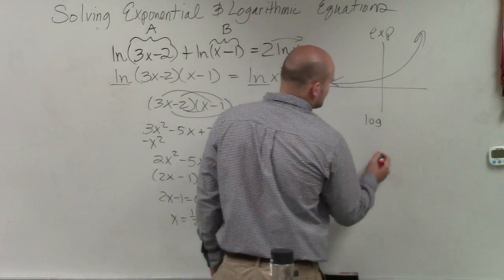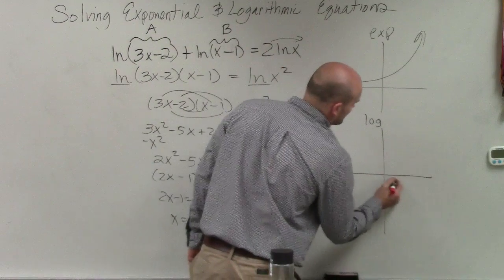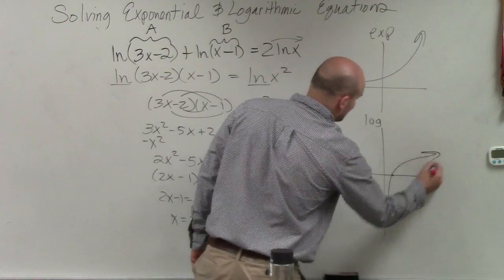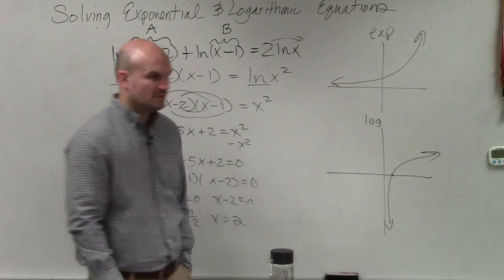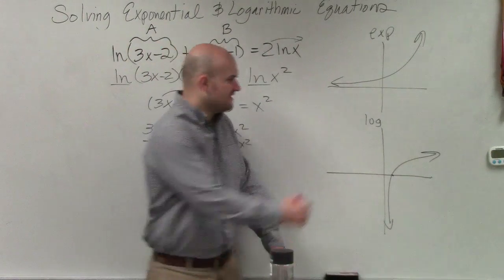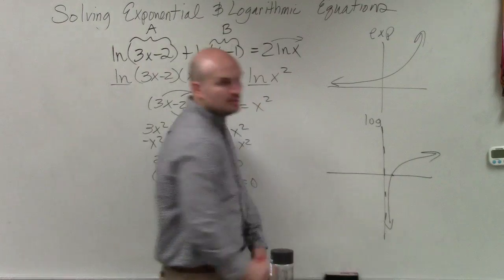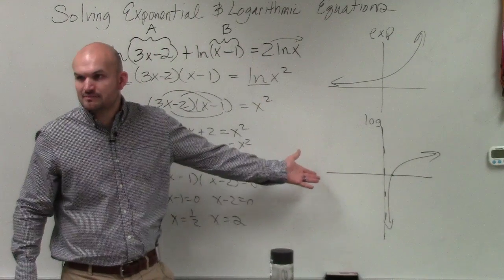However, when we look at a logarithm, we have restrictions on our domain. The domain is nothing to the left of that asymptote. There's no negative numbers in our domain, correct?